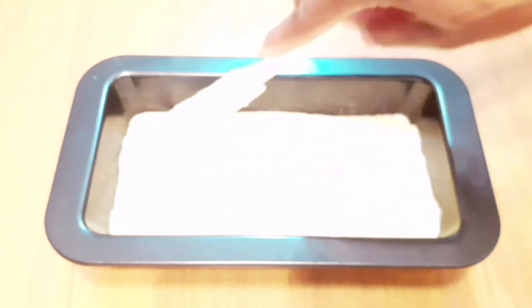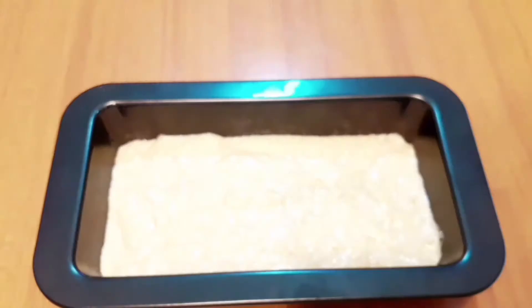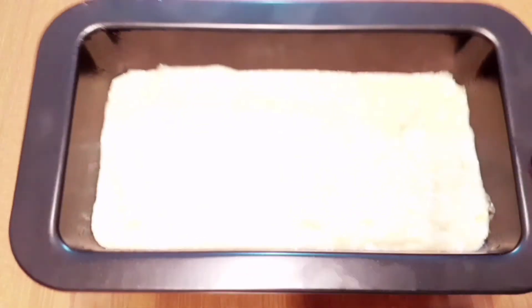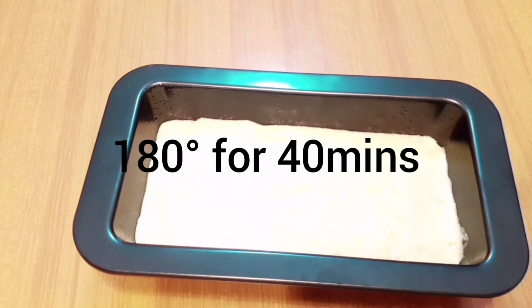Mind you, you can use any pan of your choice: the square shape, circle, star, V-shape, or triangle. I'm using this because this is what I have. It doesn't change the taste, it still remains the same. This is what it looks like inside the pan. I will put it inside the oven for about 40 minutes.